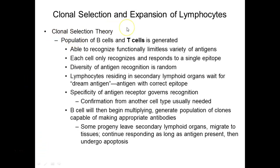Clonal selection theory applies to both B cells and T cells: they must recognize the antigen, get activated, then proliferate and differentiate. They're able to recognize a functionally limitless number of antigens because of DNA rearrangement to produce all different types of T cell receptors and B cell receptors. Each cell only recognizes and responds to a single epitope. Diversity is random — they pick different segments of DNA and put them together.